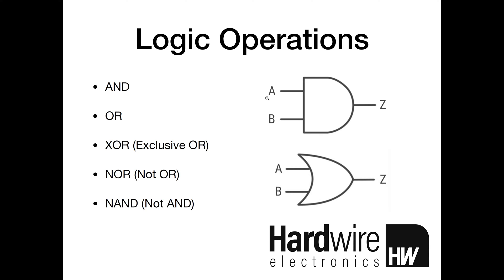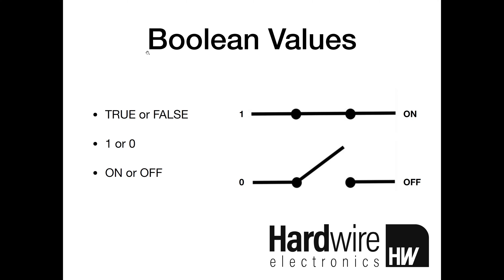All they do is compare two inputs and based on those inputs they have a certain output. To understand how they work we first need to talk about boolean values. Boolean values are really simple — there are only two: true or false. In digital electronics we tend to use the binary values one or zero, which can be thought of as either on or off.